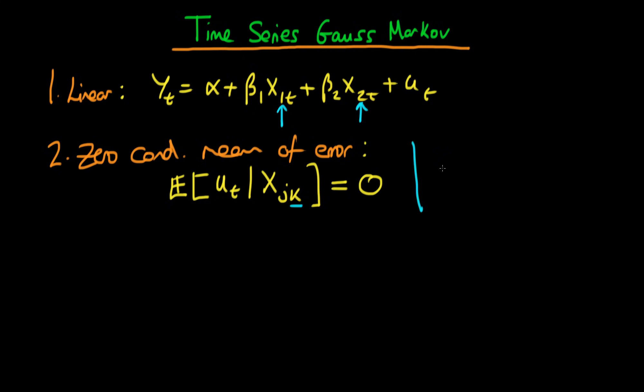And note that this differed from the cross-sectional case where essentially we required that the expectation of ui given xji had to be equal to zero. And we've got the same i here indicating that this only had to hold for that given individual. And we didn't need to worry about the other individuals because we assumed that we had a random sample.